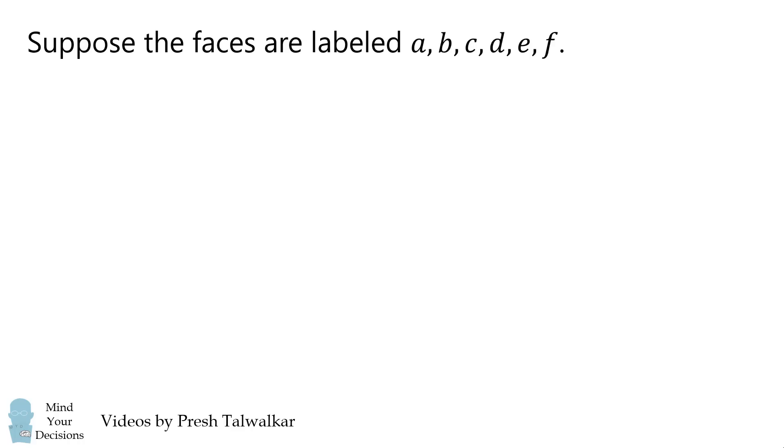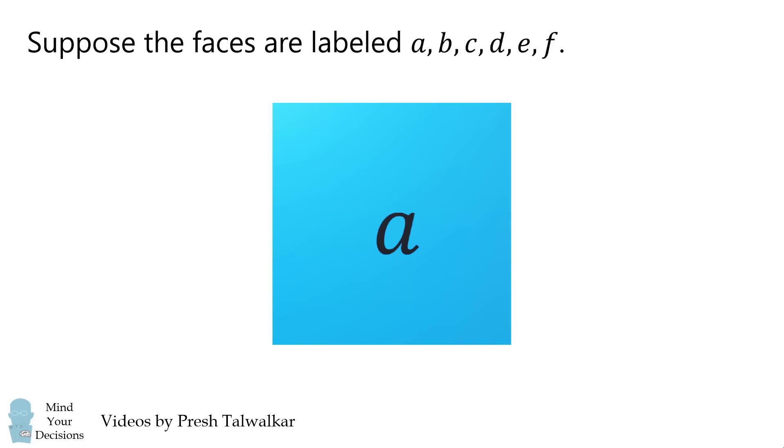So how can we solve this problem? Suppose the faces are labeled A, B, C, D, E, and F. Suppose the face we're looking at is labeled A. We'll rotate the cube to label the faces B, C, and D. We'll rotate the cube again to get back to A. On the left side, we'll label it as E. And we'll label the face on the right as F.